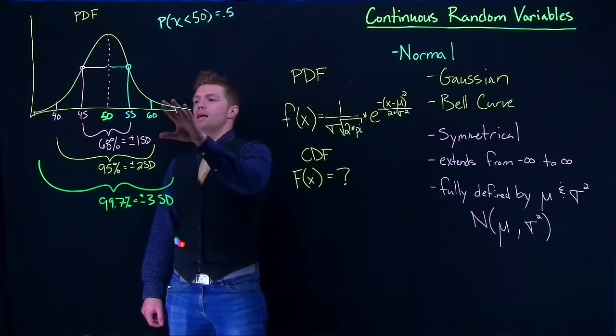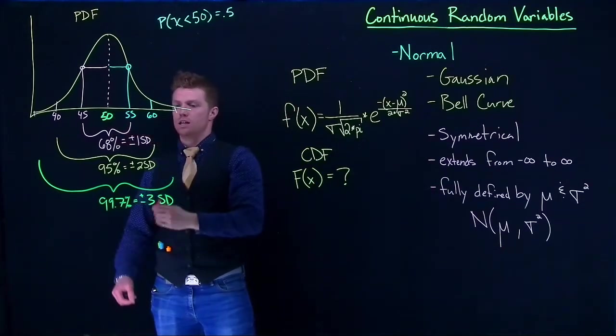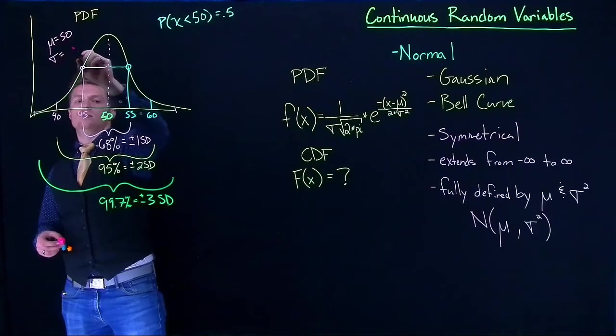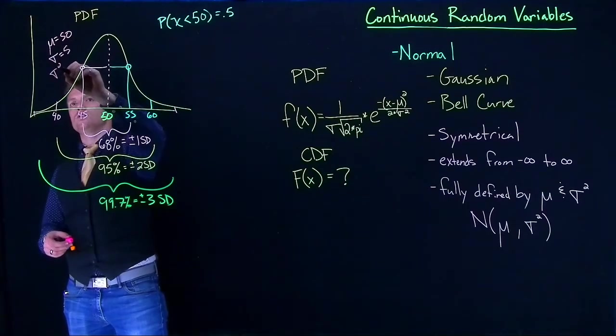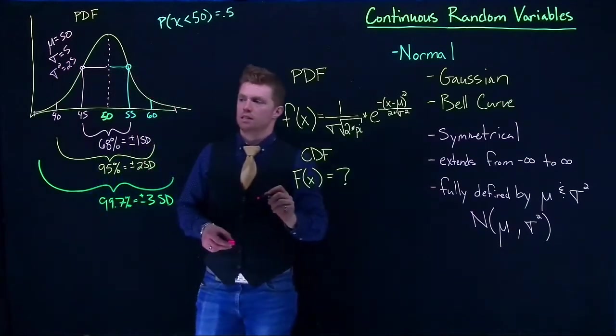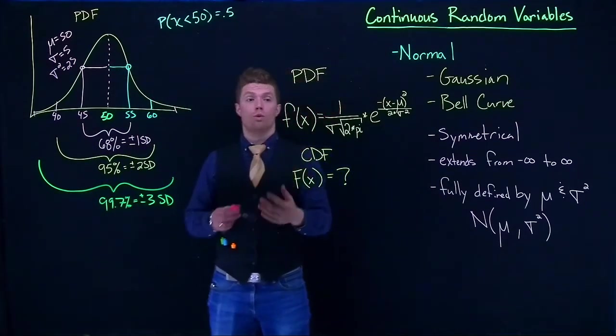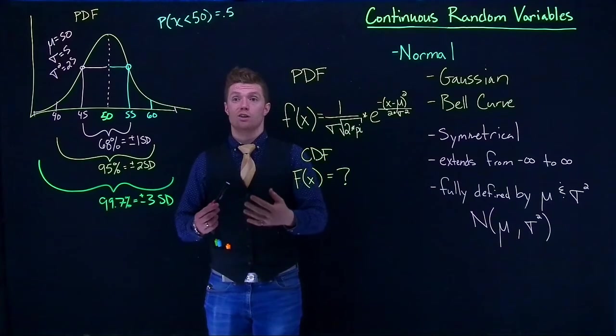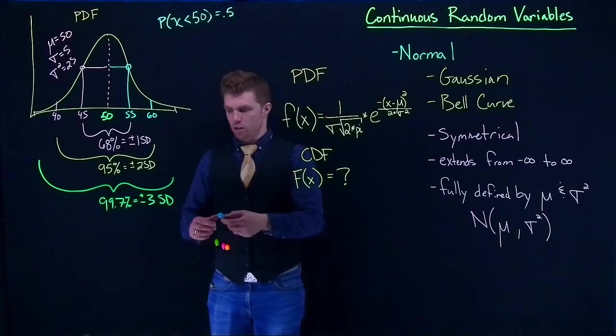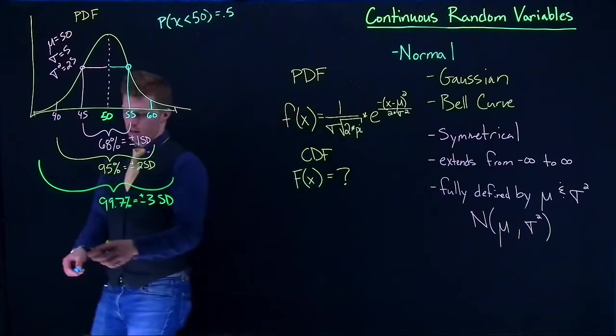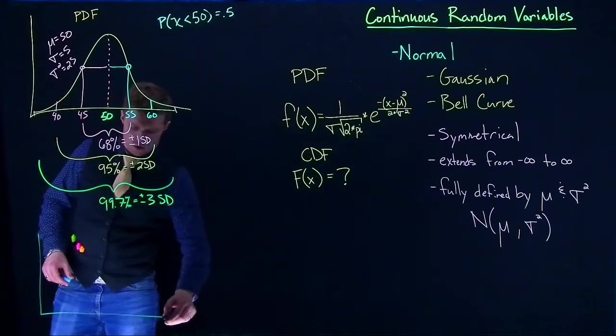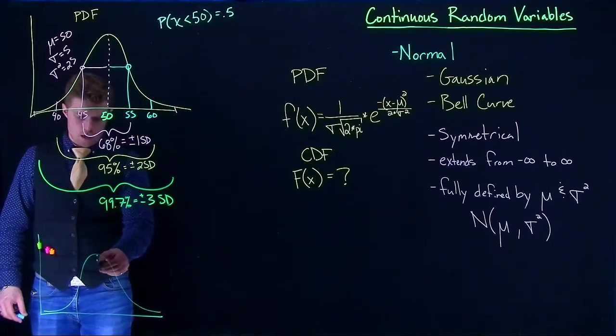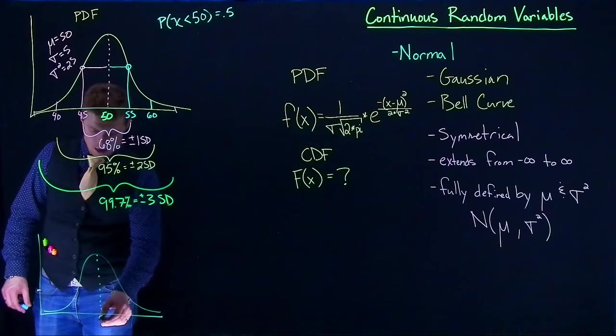So what's cool is that no matter what we have, our mean or our standard deviation, so we had mu equal to 50, sigma equal to 5, which made sigma squared equal to 25. The nice thing about all normal distributions is that they can be converted into what is called the standard normal distribution. And the standard normal distribution looks like this. So the standard normal is just your kind of regular old distribution.